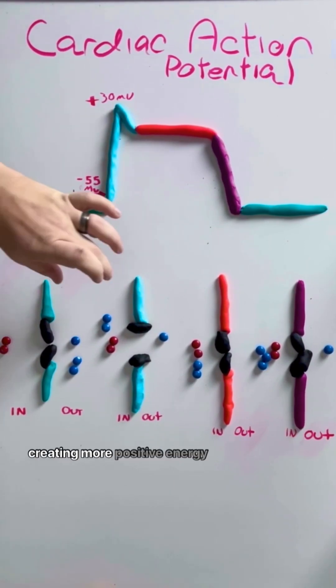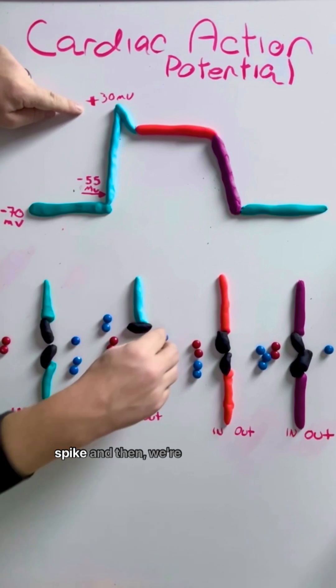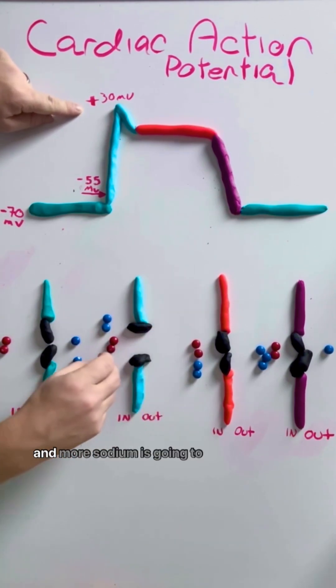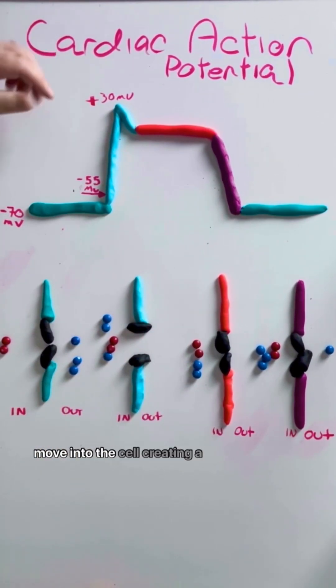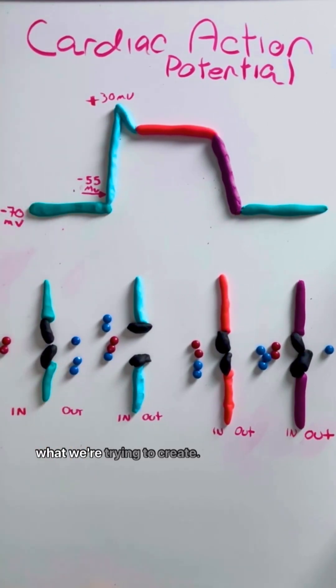And by doing that, we're creating more positive energy inside the cell, meaning that we're going to have this spike. And then we're going to have more gates open and more sodium is going to move into the cell, creating a more positive potential inside the cell, creating that mechanical contraction of what we're trying to create.